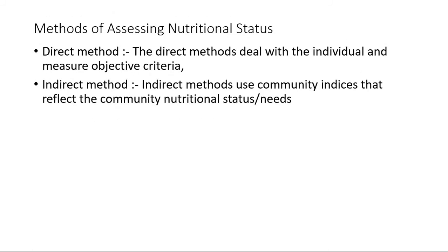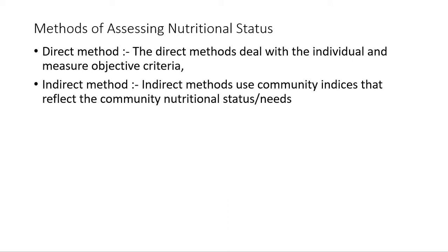What are the methods of assessing nutritional status? There are two methods: one is the direct method and another is the indirect method. Direct methods deal with the individual and measure objective criteria, whereas indirect methods use community indices that reflect community nutritional status — meaning we assess at the community level by taking community indices to determine the community's nutritional status.